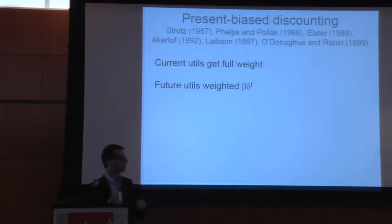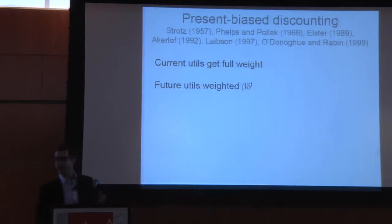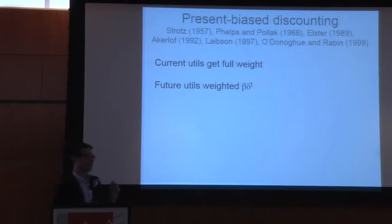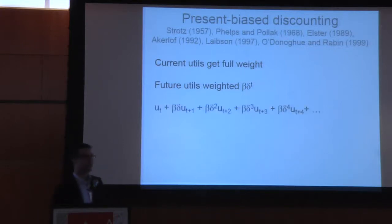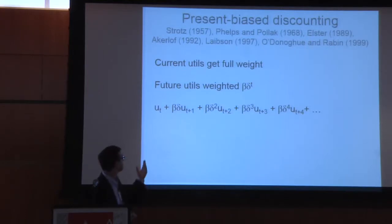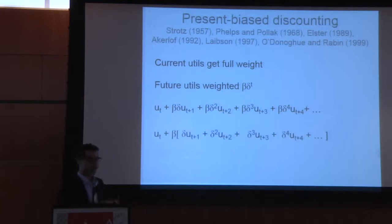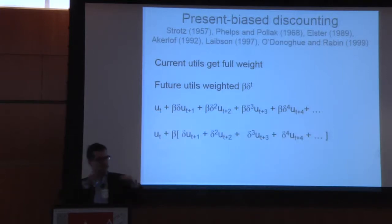The framework I'm going to think about is present bias discounting, which is obviously just one angle on this very big question. That framework assumes that current utils get full weight and future utils — even utils maybe a week away — get weight beta times delta to the t-th power, where t is the horizon. You can see that if you partial out the beta term, it's just standard exponential discounting with a beta downweighting uniformly all future utils.